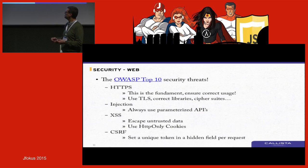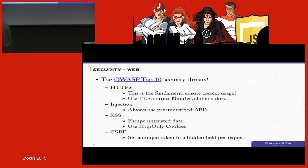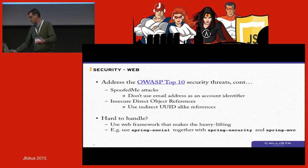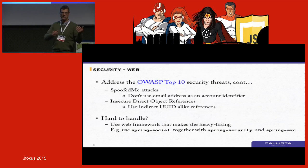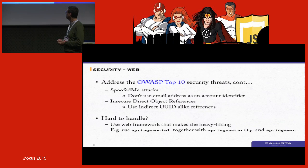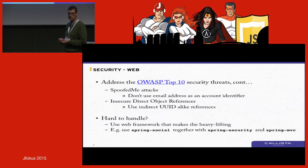The most important thing to remember is to secure HTTPS. Correctly used, OAuth 2 totally depends on secure communication over HTTPS — it has no message-based security built in. Then there are the usual suspects: injection, cross-site scripting, cross-site request forgery, spoofing attacks, and insecure direct object references — which happen when you use keys and identities in clear text instead of UIDs or something abstract, making them easy to guess. If you find this hard to handle yourself, we recommend using Spring Security and Spring MVC, which have a lot of built-in functionality that, when used correctly, can prevent many of those attacks.